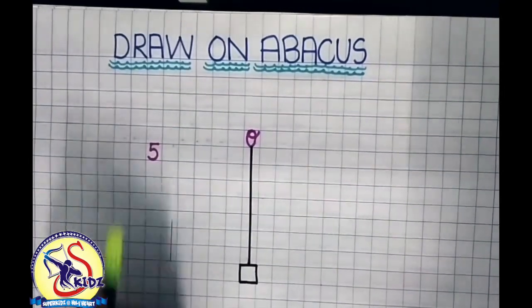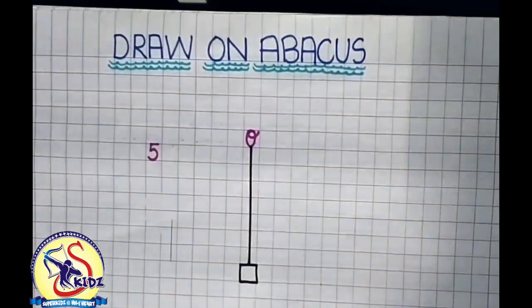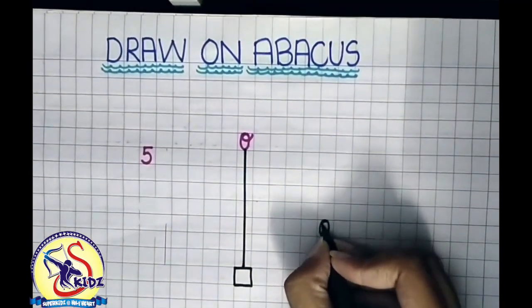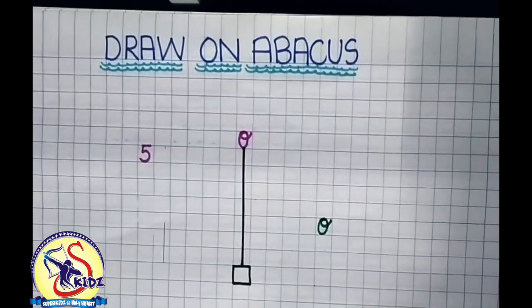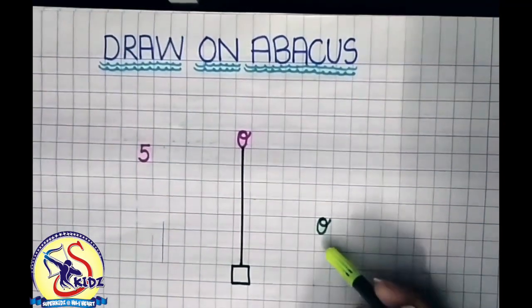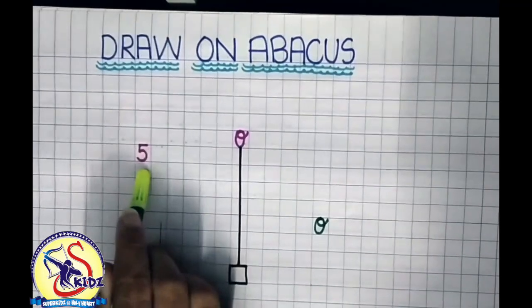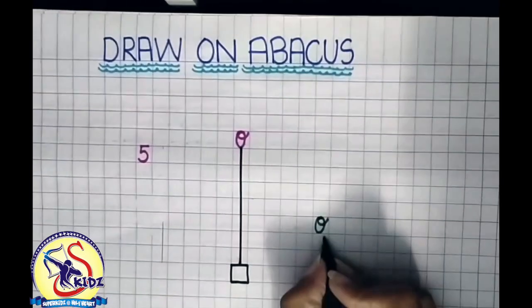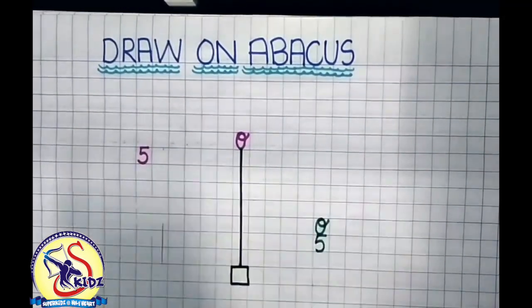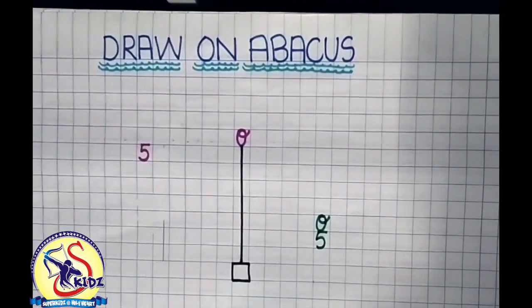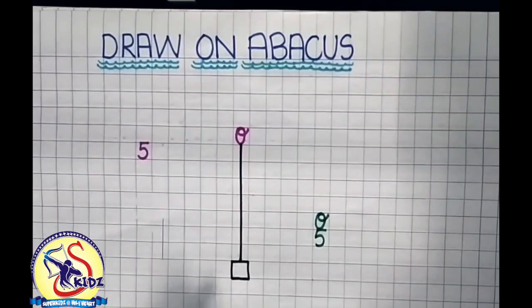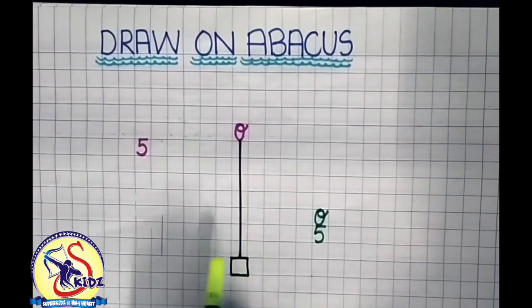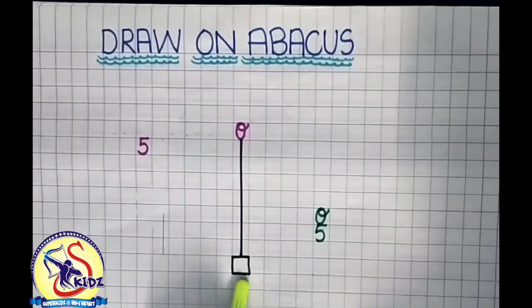Number 5 is a single digit number, so I am writing here 1s. Now we will write the number 5 under the place of 1s. We will draw number 5 on Abacus.